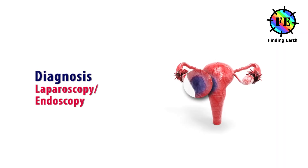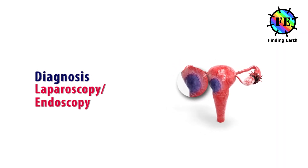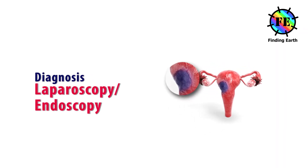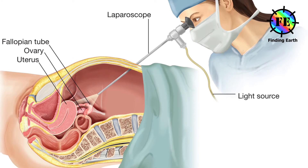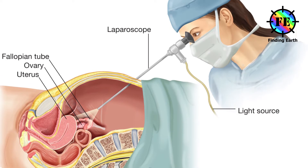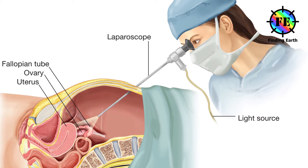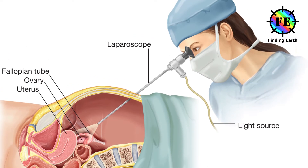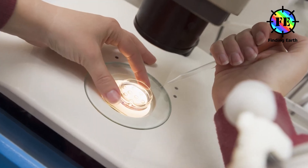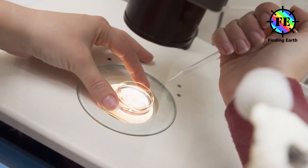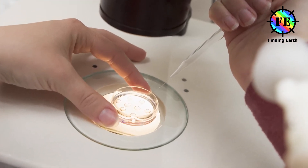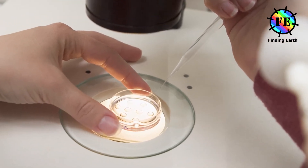Laparoscopy and possibly endoscopy: A laparoscope — a thin viewing tube with a camera at the end — is inserted into the patient through a small incision in the lower abdomen to examine the ovaries in detail and can also take a biopsy.